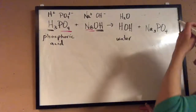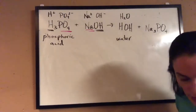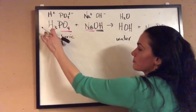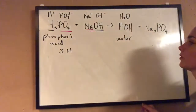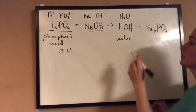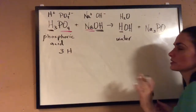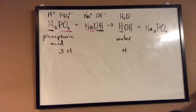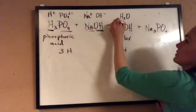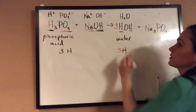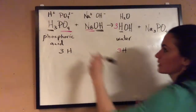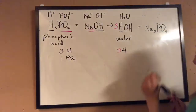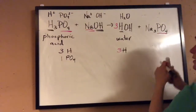Now let's check that it's balanced. I'm going to follow the ion approach because that's easier — we have two polyatomic ions: phosphate and hydroxide. Let's count the hydrogen ions: three hydrogen ions on the reactant side. But on the product side we have one hydrogen, so let's use a coefficient of three to balance out the hydrogen ions. Now let's go to phosphate: one phosphate ion on the reactant side, one phosphate on the product side.